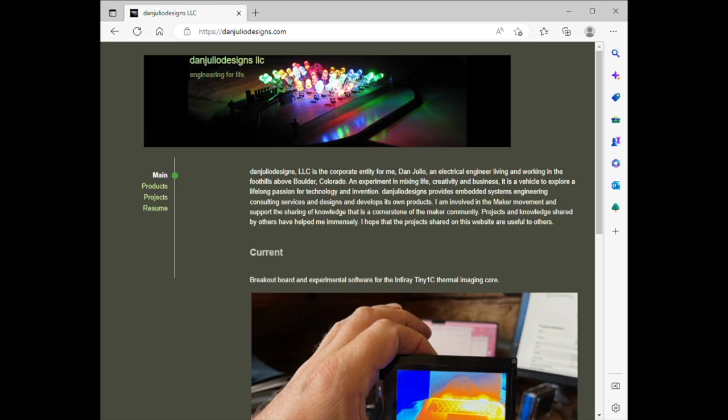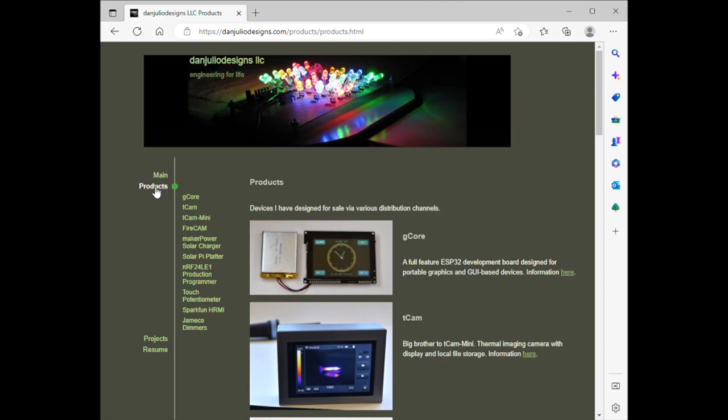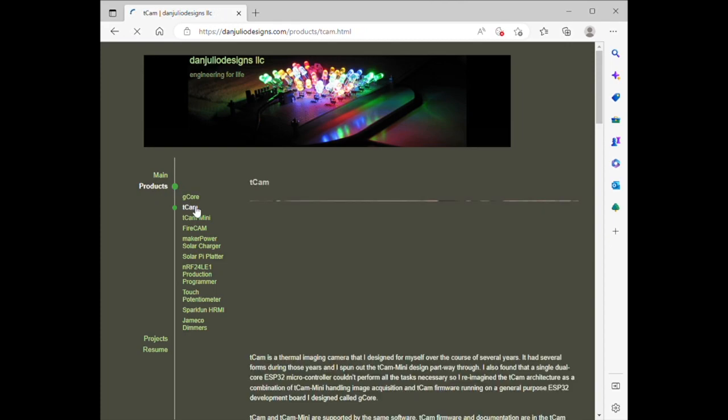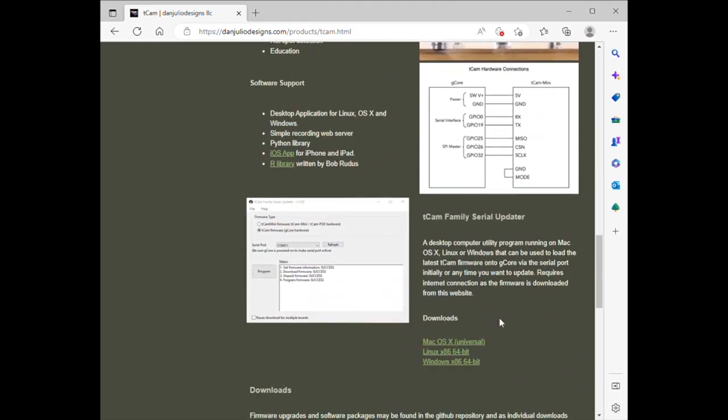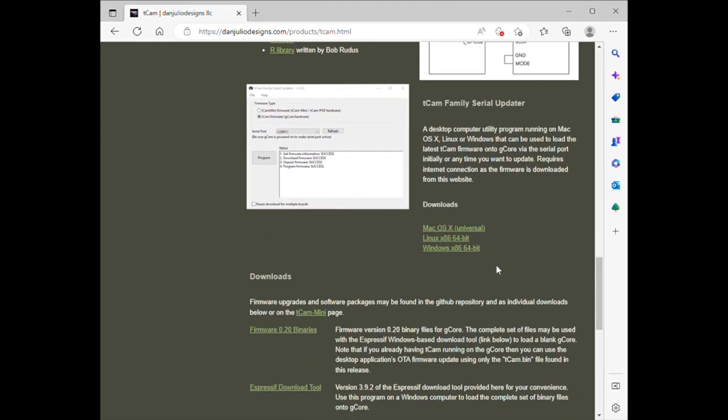G-Core comes loaded with a demo that needs to be replaced with the TCAM firmware. To make that easy, I wrote a loader program that runs on Linux, Mac, and Windows computers. Go to my website and drill down to the TCAM page. Scroll down until you find the serial updater and then download the zip file for your platform.